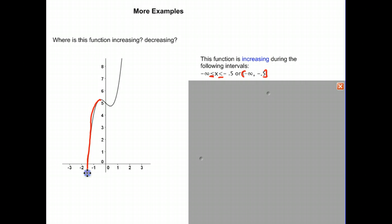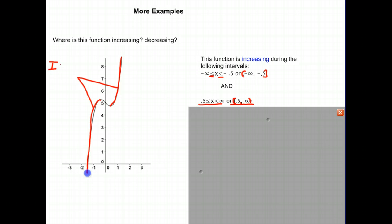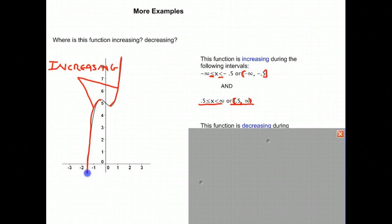You might notice there's another interval where it's increasing. It's increasing from approximately positive 0.5 and continues off to infinity. We can express that as x is greater than or equal to 0.5 and less than infinity, or using a square bracket for 0.5 and a rounded bracket for infinity. So those are the two increasing intervals. It is decreasing from negative 0.5 down to positive 0.5, so this is where it's decreasing.